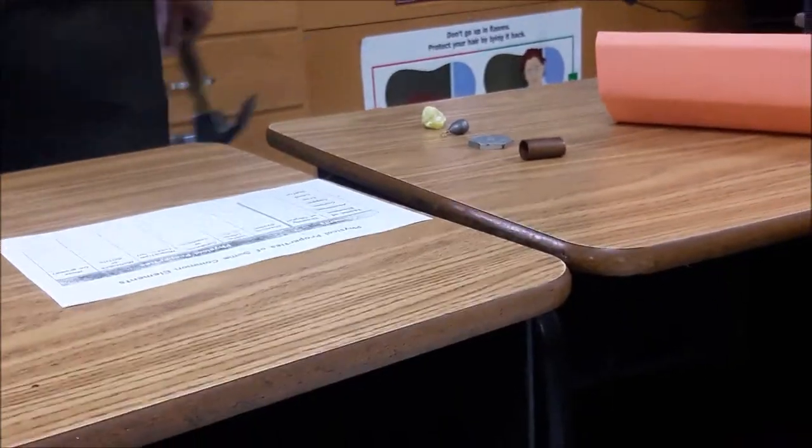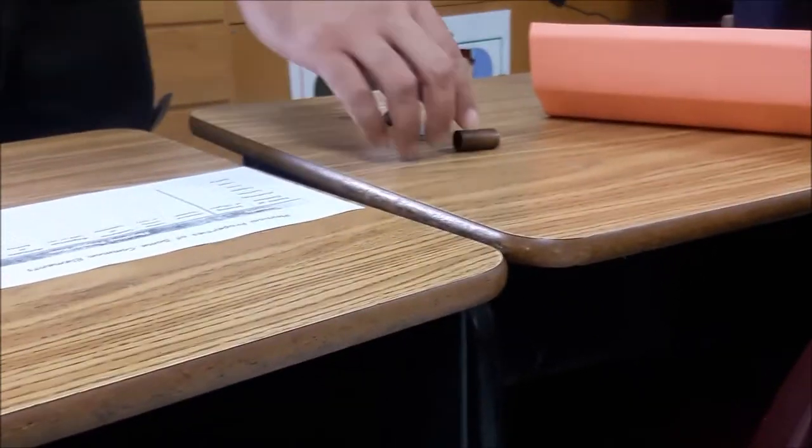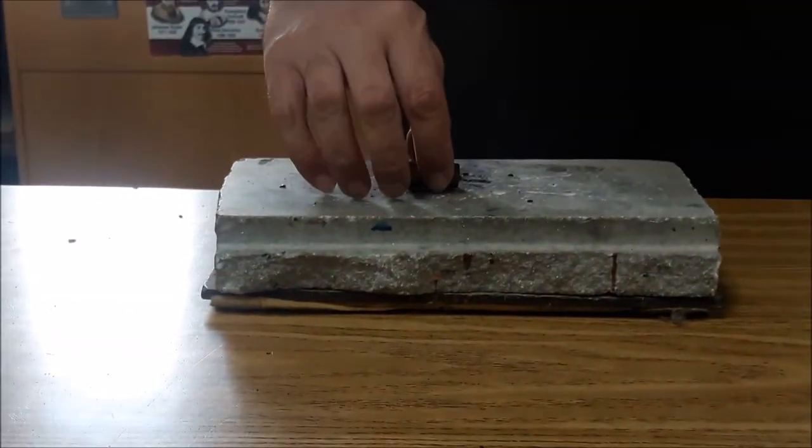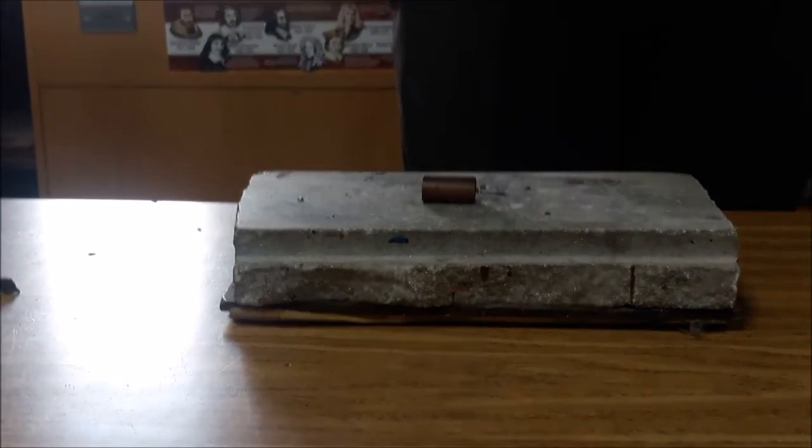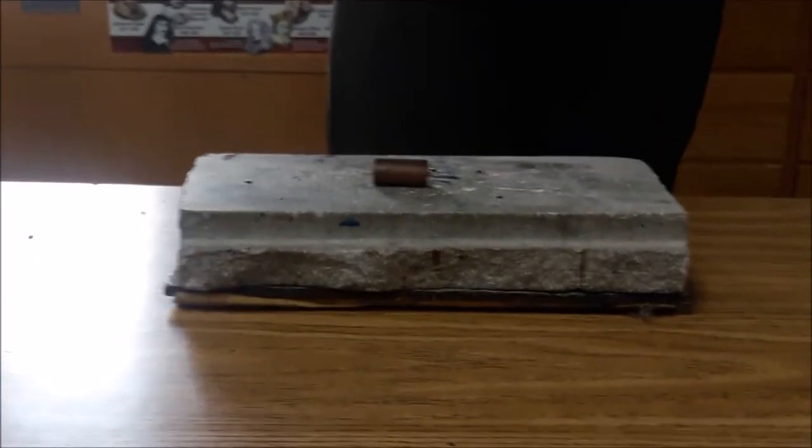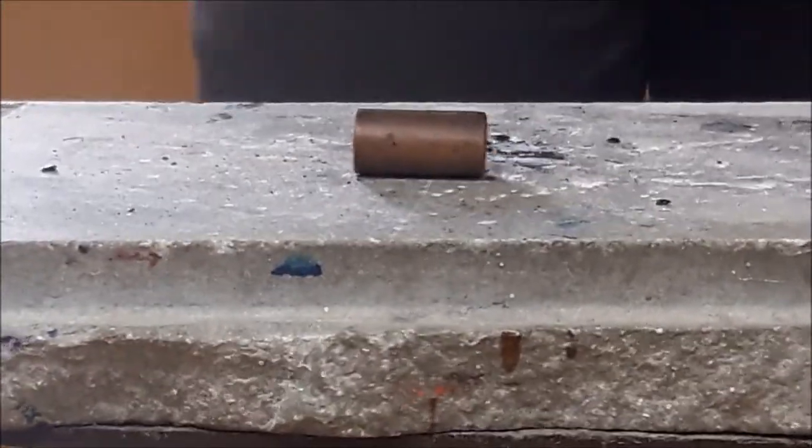The next element we're going to test is going to be the copper. It's a little piece of copper piping that you might see in plumbing. We're going to put that there. So what do you guys think? Malleable or brittle? Let's find out.